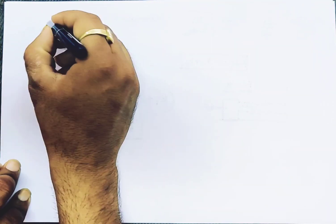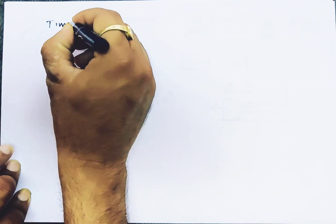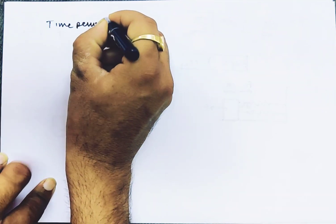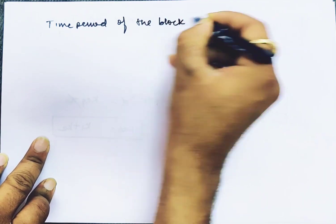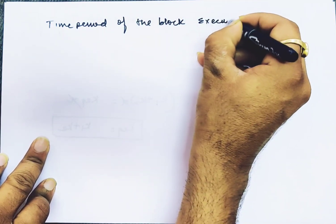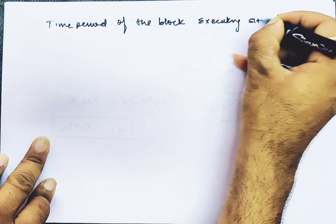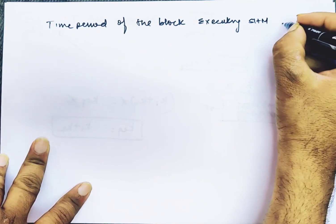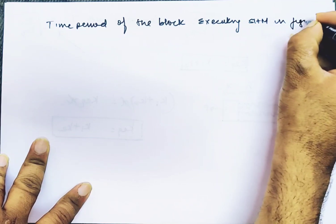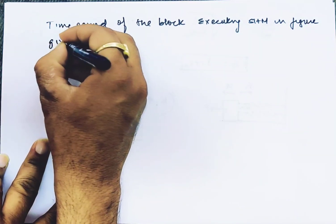Now let's talk about different connections of springs and the time period of a block executing SHM in the figure given below.